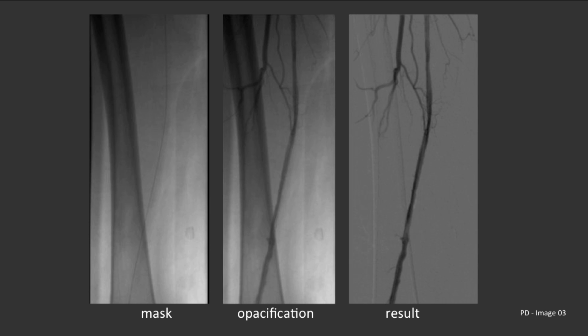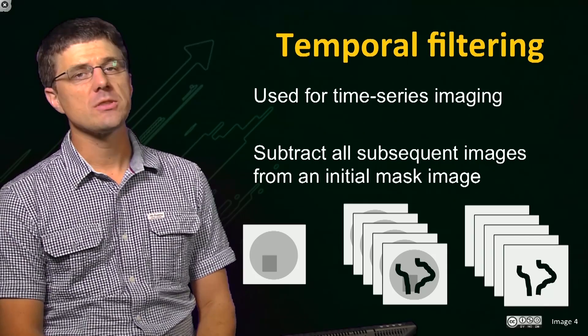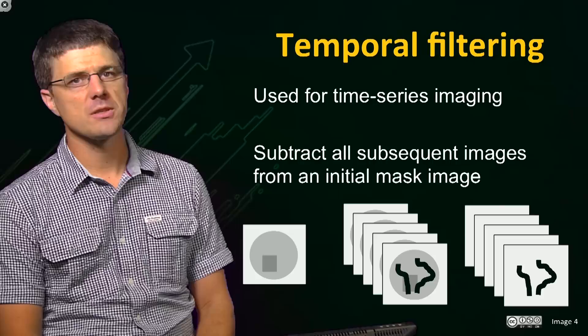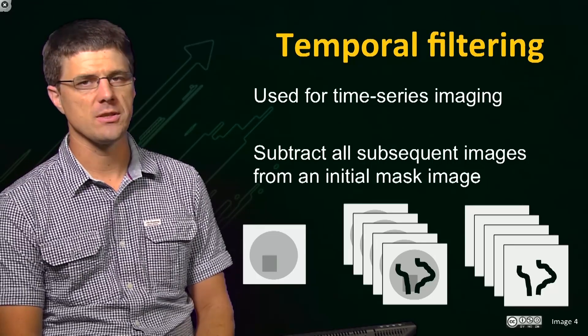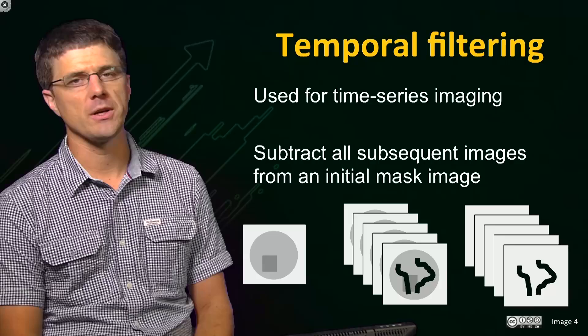In this example we have used a linear subtraction method, as it is easy to demonstrate. In the real world, X-rays penetrate tissues non-linearly, and in order to compensate for this, we would calculate the natural logarithm on a pixel by pixel basis for each of the images before subtraction. This process can then be applied for a time series of images in which each of the subsequent images are processed using the same initial mask image.